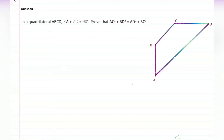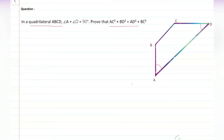Hello everyone. In this video we are going to discuss a geometrical problem based on quadrilateral. We have a quadrilateral ABCD where angle A plus angle D is equal to 90 degrees — that is, the sum of these two angles equals 90. We have to prove that AC² plus BD² is equal to AD² plus BC².